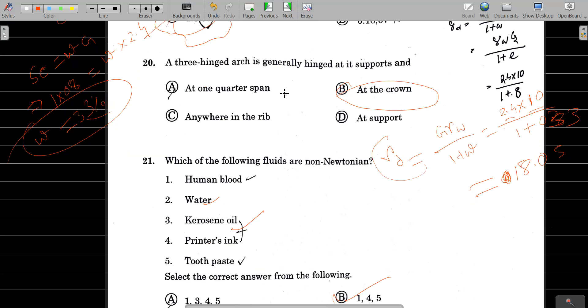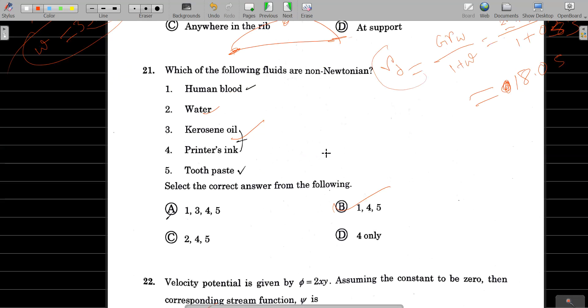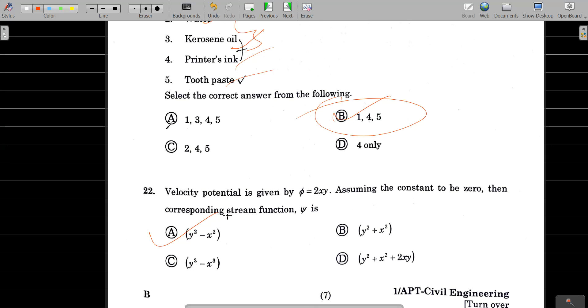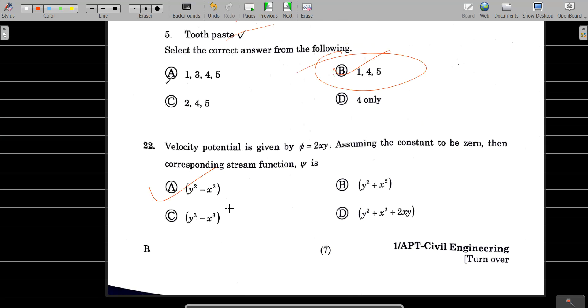Question number 20: At RC beam hints and supports, try to solve by iteration. Next: water and kerosene are Newtonian fluids. In fact, human blood, printing ink, and toothpaste are non-Newtonian fluids. So option C is the correct answer. Question 22: Velocity potential is given by phi equals 2xy. Assuming z to be zero, find the corresponding stream function.